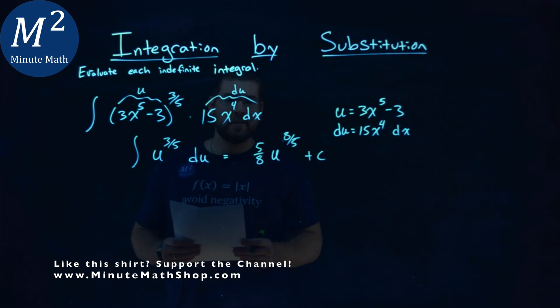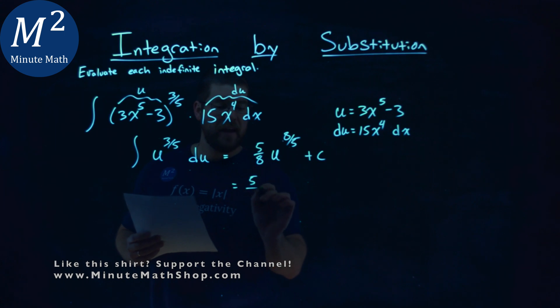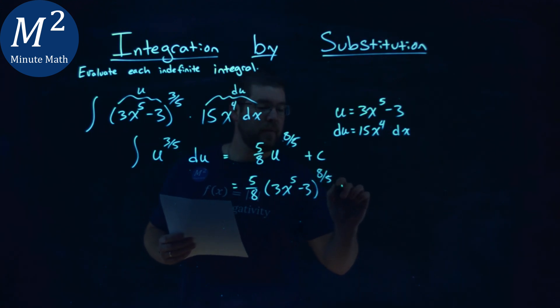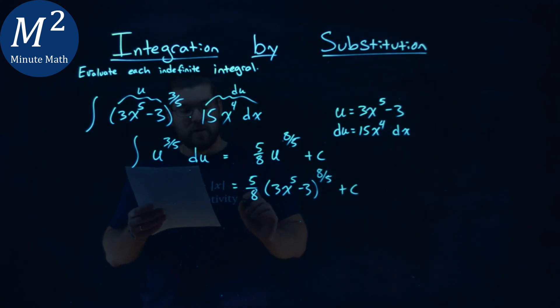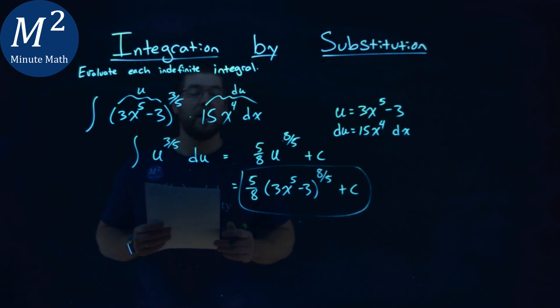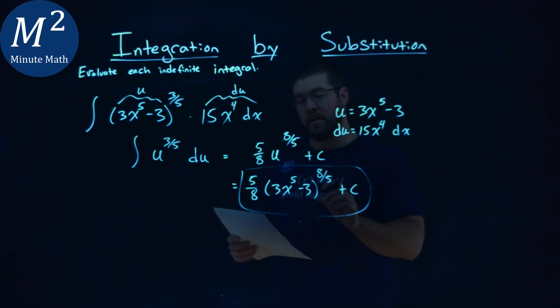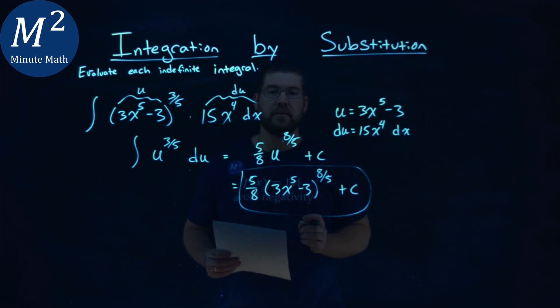So then from here, we can really just plug in our u value. 5 8ths times a u value of 3x to the 5th minus 3 to the 8 5th power, and then we have the plus c. And so our final answer here is done in my book. 5 8ths times 3x to the 5th power minus 3 to the 8 5th power plus c.